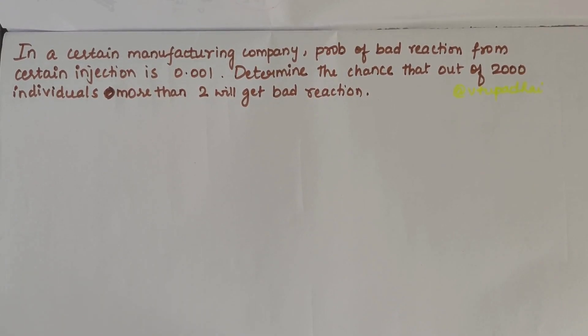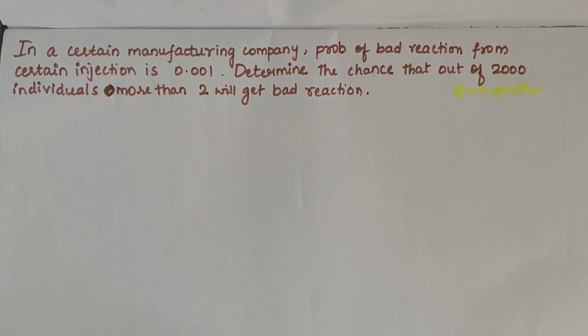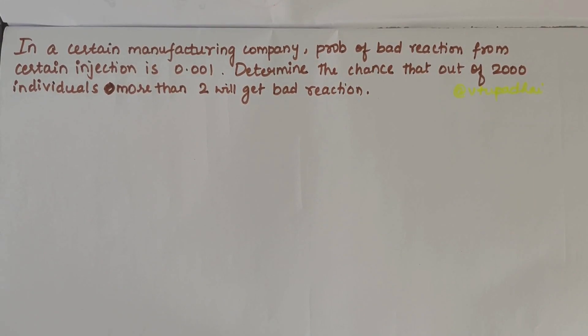In this video, we'll be solving a numerical problem based on the Poisson distribution. The problem states that in a certain manufacturing company, the probability of a bad reaction from a certain injection is 0.001. We have to determine the chance that out of 2000 individuals, more than 2 will get a bad reaction. This is a straightforward and simple question.